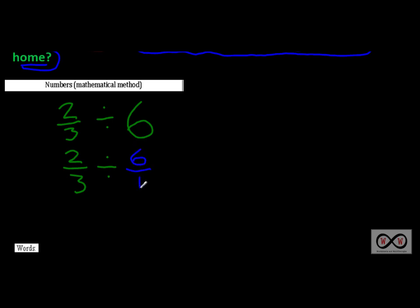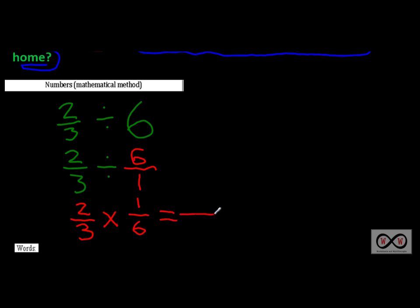We put six over one, with one as the denominator. Six divided by one equals six, so it's the same value. We can also rewrite this problem as two-thirds times the inverse — since multiplication is the inverse operation of division. So we invert that second fraction: instead of six over one, we have one-sixth. Now we can simply multiply.